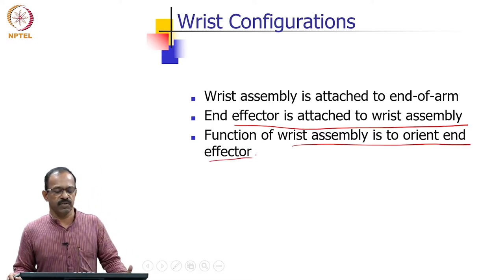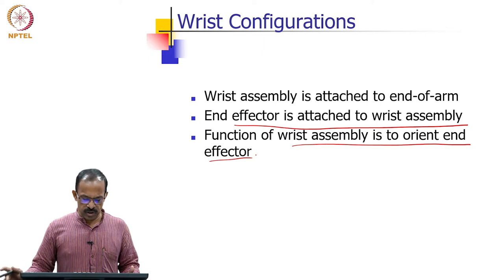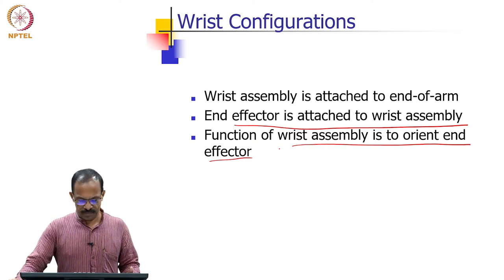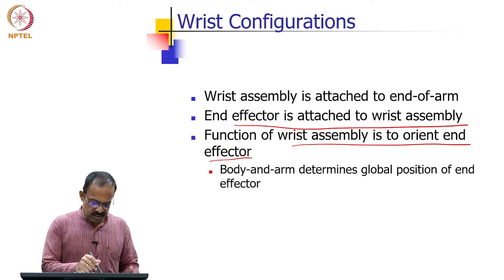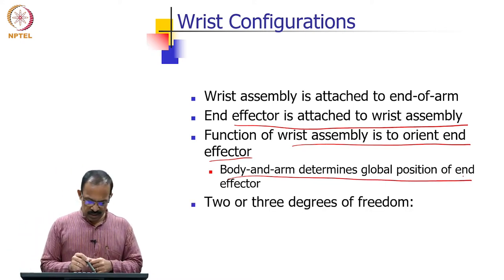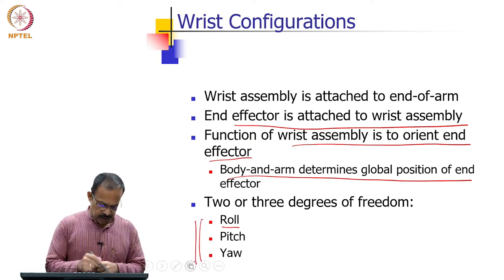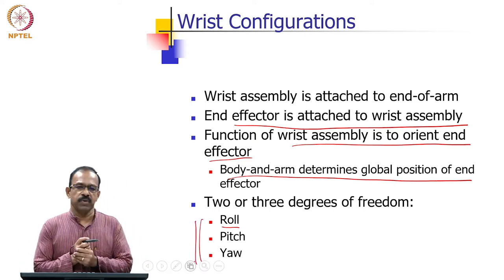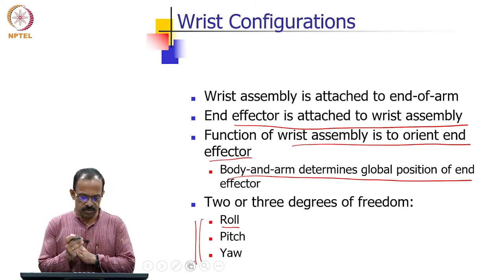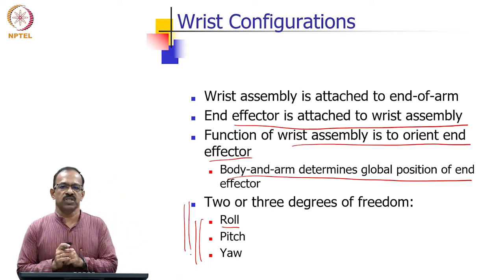You can actually orient the end effector using the wrist assembly because the wrist assembly has 3 degrees of freedom. The body and arm determine the global position of the end effector, and the 2 or 3 degrees of freedom wrist allows you to get roll, pitch, or yaw. So body and arm give you the position, and the wrist gives you the orientation — roll, pitch, and yaw.